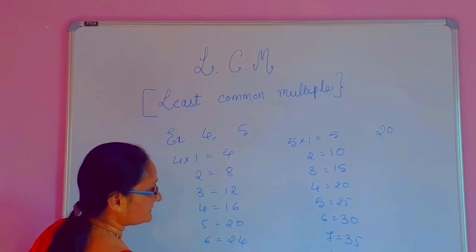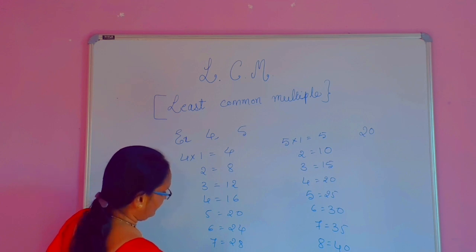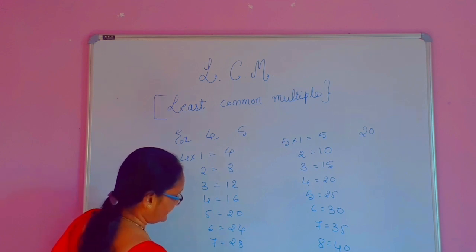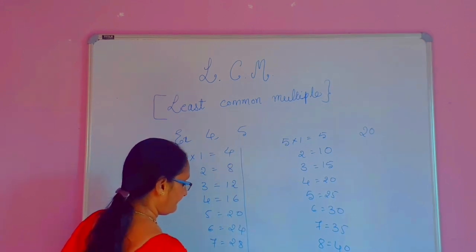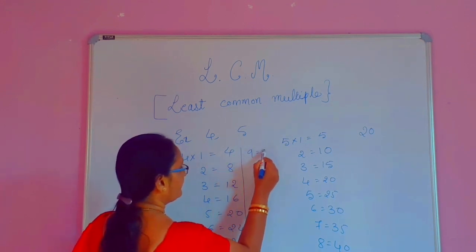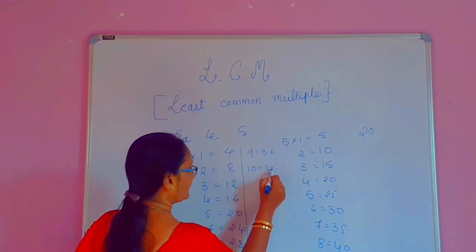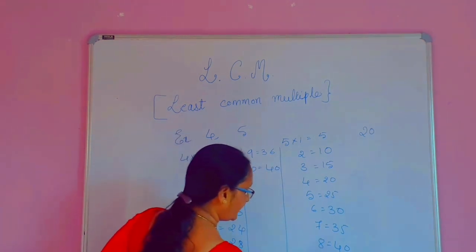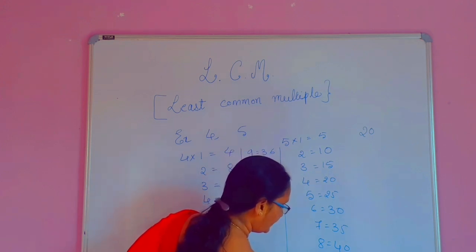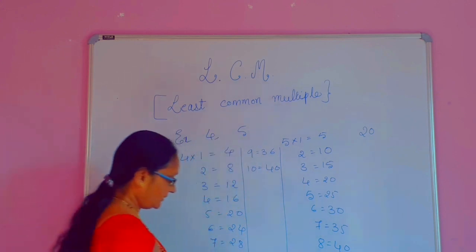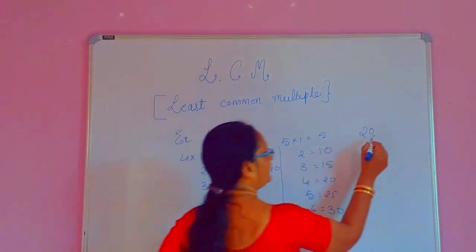Next, like this only — 24, 28. 4 eights are 32. 4 nines are 36. 4 tens are 40. And in the same way, 5 nines are 45. 5 tens are 50. One more common multiple we are finding here — that is 40.